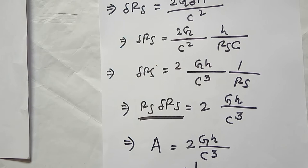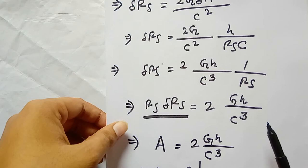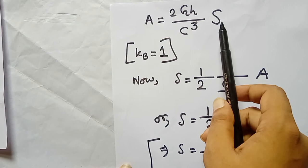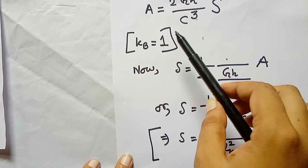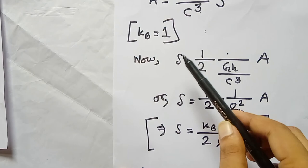Now the physics: entropy is information. For one bit of information, the area increases by A. For S bits of entropy, the area relation gives A equals 2Gh divided by c cubed equals S. Applying the assumption that Boltzmann's constant kb equals 1, we get S equals one-half times A divided by lp squared, or S equals A divided by (2 lp squared).